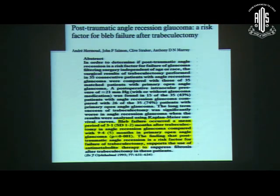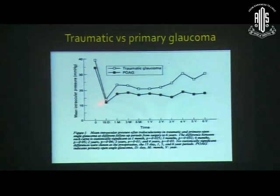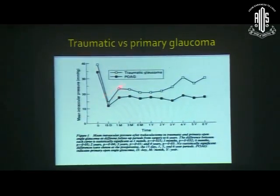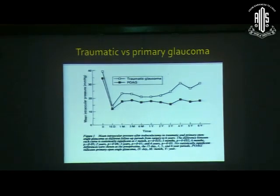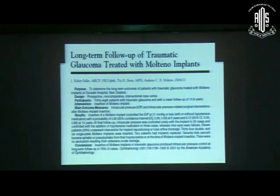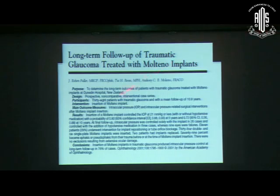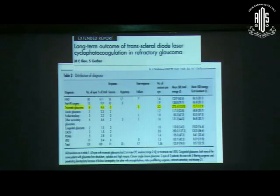One study showed that trabeculectomy in eyes with angle recession glaucoma fails earlier — at a mean of 3 months — compared to 9 months in eyes with primary open-angle glaucoma, when wound modulators are not used. The bar graph shows that at all time periods after surgery, traumatic glaucomas have higher mean IOP compared to primary glaucomas, indicating greater inflammatory response and wound fibrosis of the bleb. When glaucoma drainage devices, particularly Molteno implants, were used, 76% of cases achieved optimum IOP control with or without additional medication; however, 29% required further surgical intervention for implant complications such as blockage or exposure.